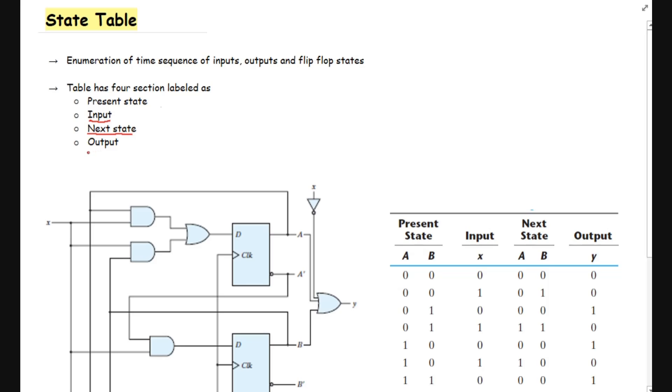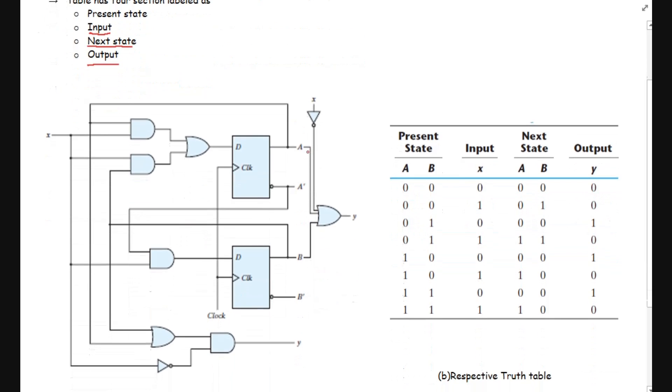And finally, we have the output which is the function of the given present state and given inputs. So let us go to the example previously discussed.